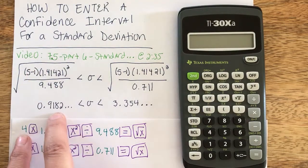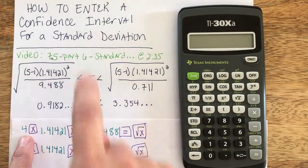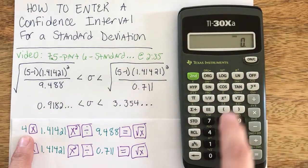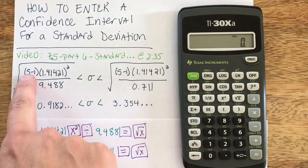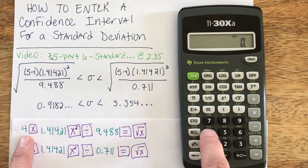So to do the lower limit of my standard deviation confidence interval, I'm going to turn my calculator on and just start with 5 minus 1 is 4. I'll do that in my head.